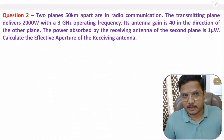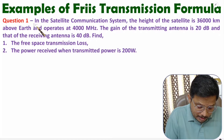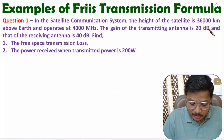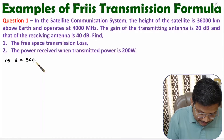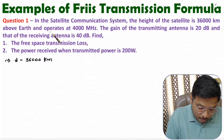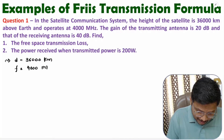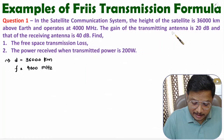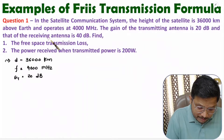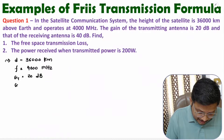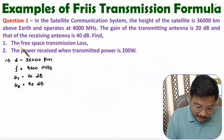Let us solve the first question. In the first question, a satellite communication system has the height of the satellite at 36,000 kilometers — so the distance between the two antennas is 36,000 km above Earth. It operates at 4000 MHz. The gain of the transmitting antenna is 20 dB and that of the receiving antenna is 40 dB.